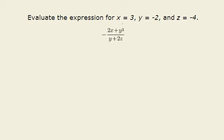The first thing I'm going to do is substitute the values for each variable in our expression. So we've still got the negative sign out front, fraction bar. The numerator, we have 2 times x, x is 3, so we have 2 times 3, plus y cubed, y is negative 2, which is negative 2 cubed.